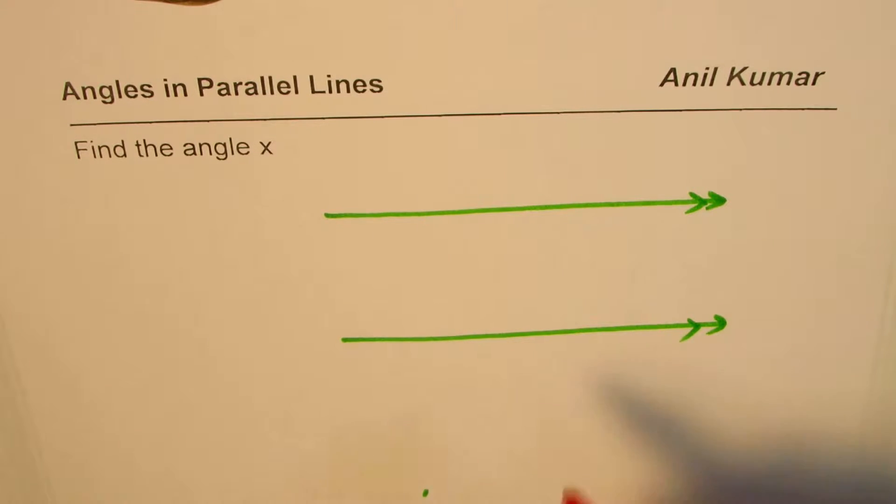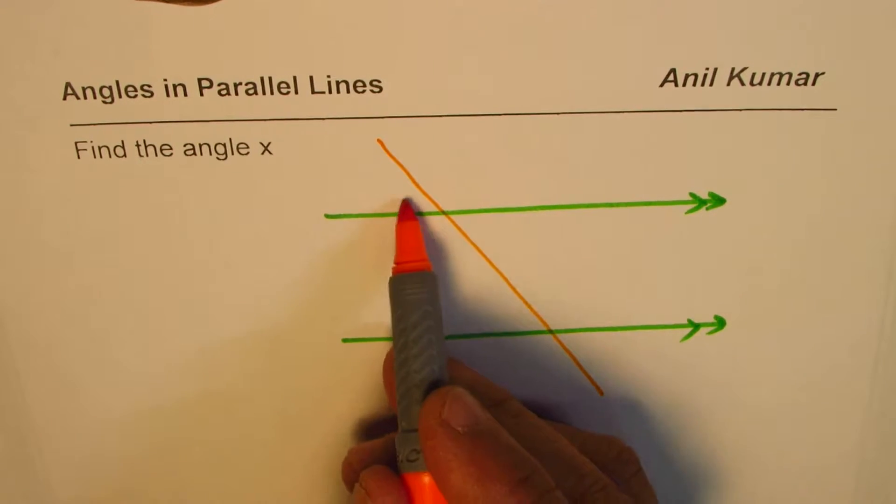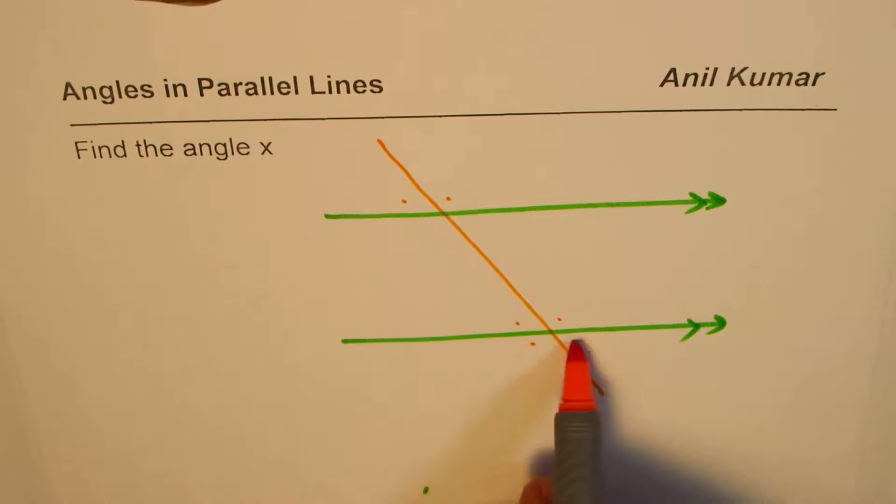Now normally in every example we have a transverse line. Let's say we have a transverse line here and we're looking for angles around these points. And I think by now you must have become an expert on it.